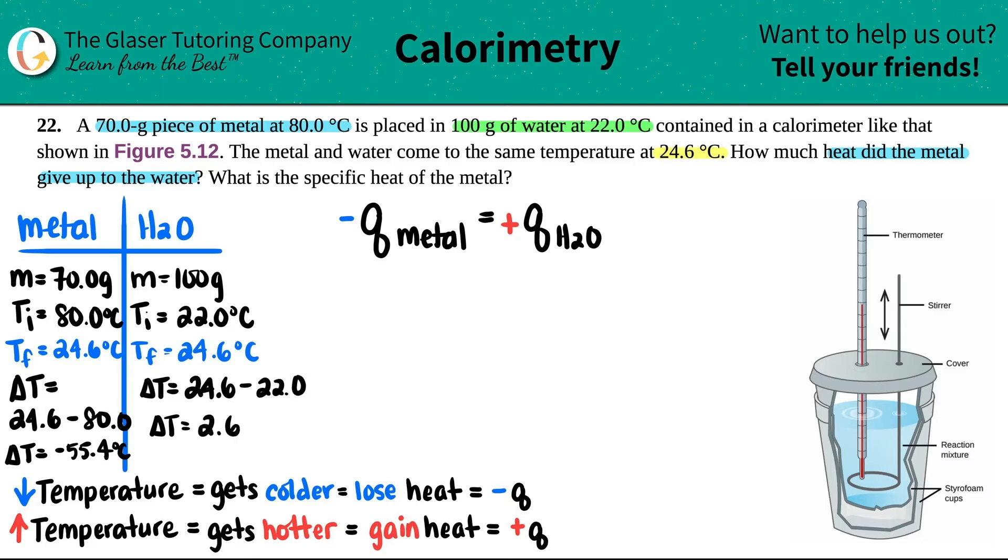And then the delta T for the water would be a positive 2.6. So everything is checking out. You could always just double check your signs by just, you know, keep reiterating, does this make sense? Are we gaining temp, are we losing temp? So we're good up until now.